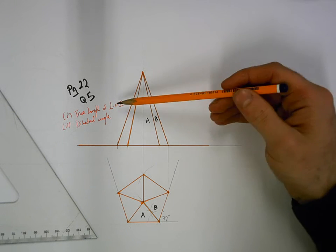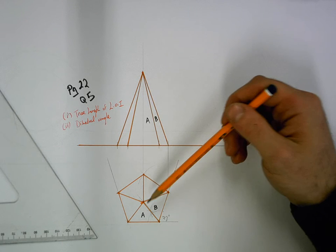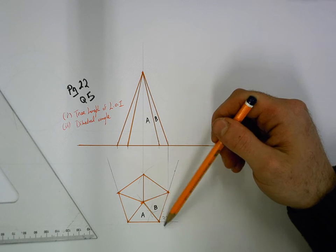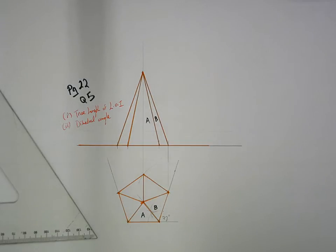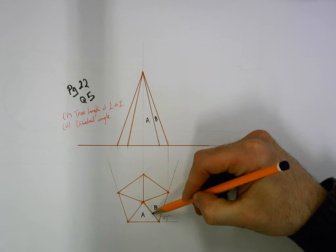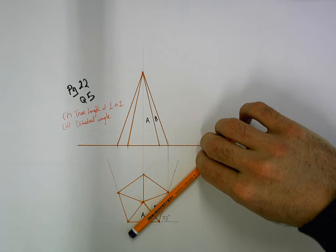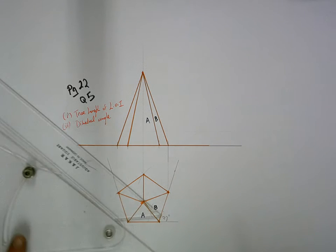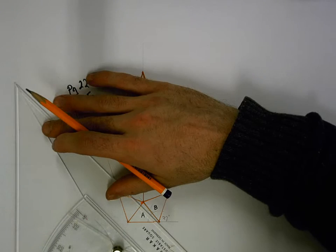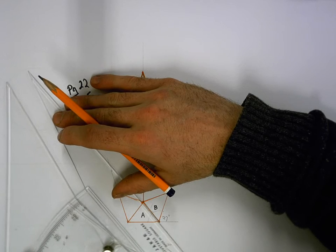What they're asking for in the question is a true length of it. So as it stands we don't see a true length of it because it's angled away from us. You can only see the true length of something when you're looking straight at it. So in that case we're going to create an auxiliary view and we're going to look straight at that line of intersection which means looking perpendicular to it. So if this is the line of intersection, I'm going to be looking up perpendicular, so in the direction of the pencil there. Your adjustable is the best thing to use in that case. So set the angle to match your line of intersection.